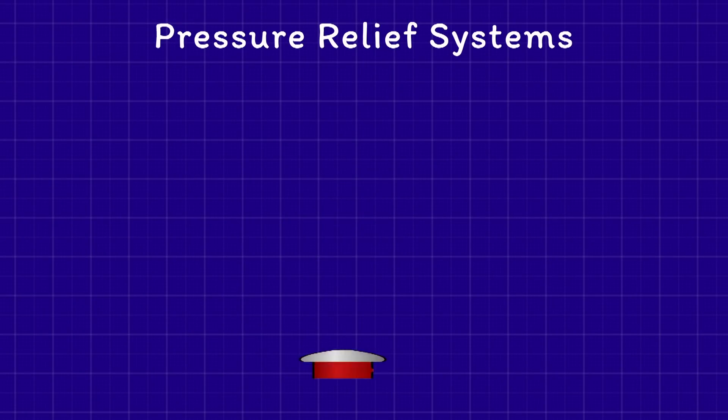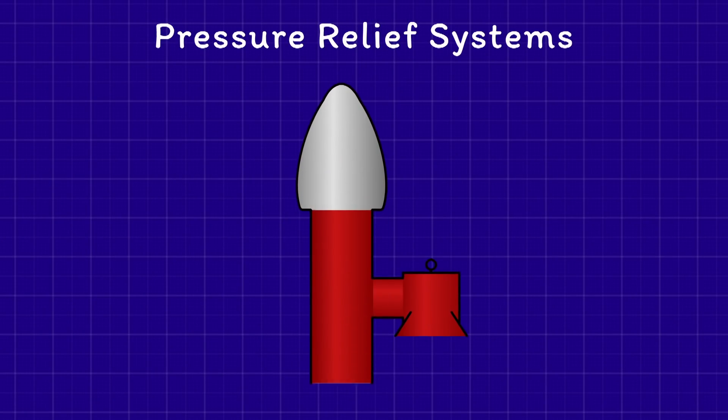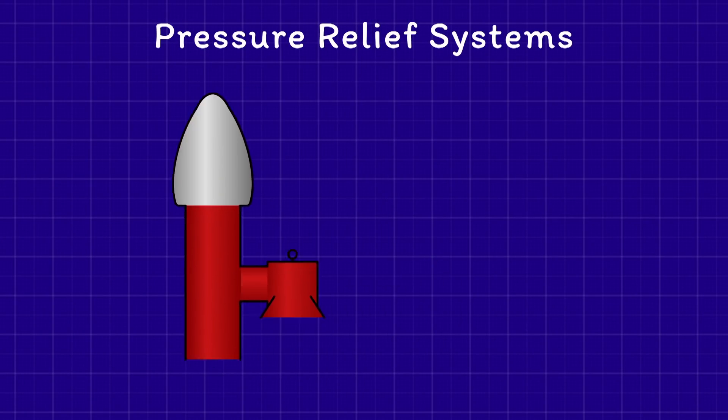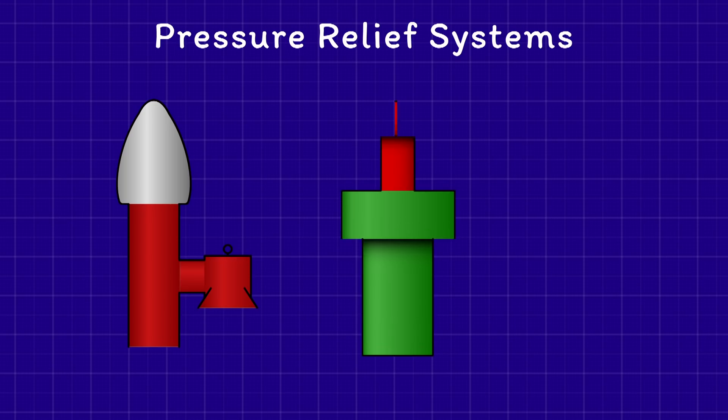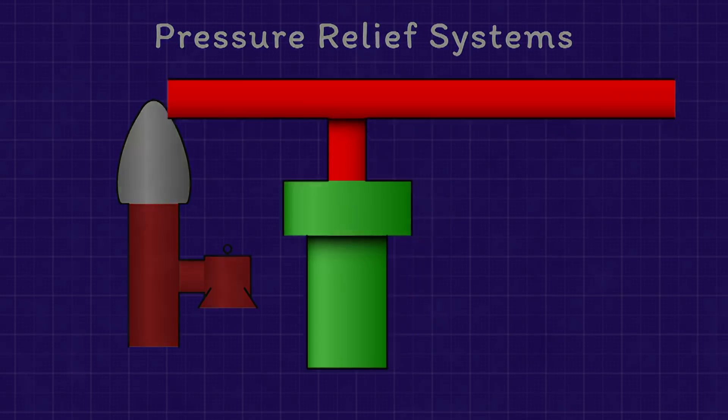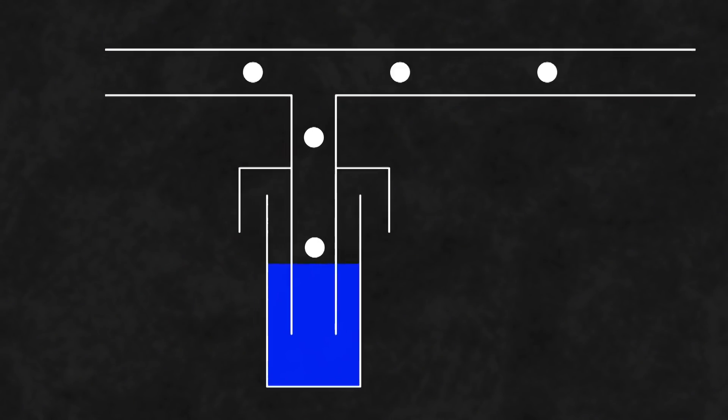A pressure relief system usually consists of two relief methods. PV, or pressure vacuum valves, or a PV breaker. A PV breaker is the simplest, typically installed on an inert gas line and operated using a simple liquid plug.